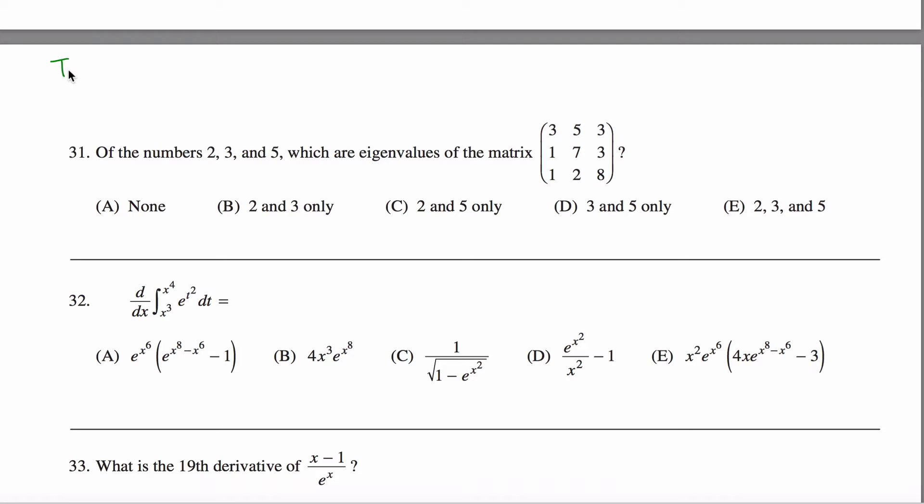So quick refresher on eigenvalues. Eigenvalues are constants that satisfy this equation. The V in this equation is what's called an eigenvector, the T is the matrix, and lambda is the constant.